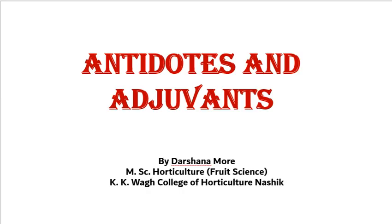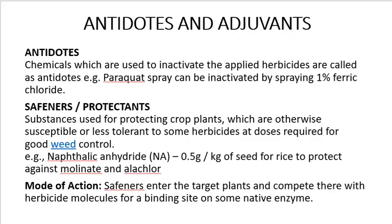The first is antidotes — chemicals which are used to inactivate the applied herbicide are called antidotes. For example, paraquat spray can be inactivated by spraying 1% of ferric chloride. That means antidotes act to inactivate the applied herbicides.